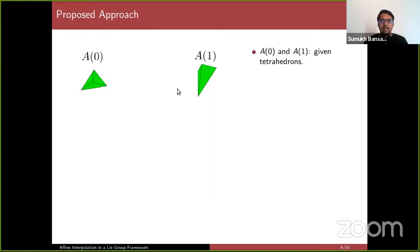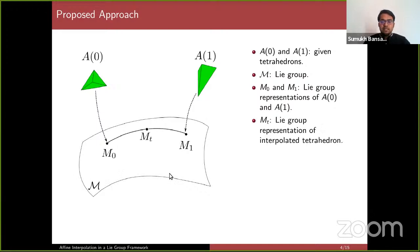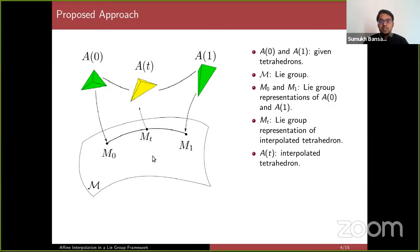The idea is simple. We start with a pair of tetrahedrons A0 and A1, represent these tetrahedrons by elements of a Lie group M, perform the interpolation in the Lie group space, and compute an interpolated tetrahedron using an inverse process from the interpolated Lie group element. For those who don't have a background in Lie groups: a Lie group is a group and a smooth manifold such that the group multiplication and inversion operations are smooth. Hopefully things will be more clear in the coming slides.